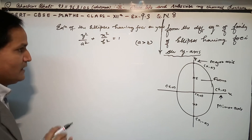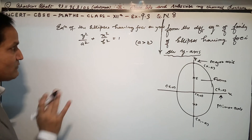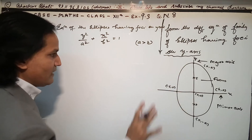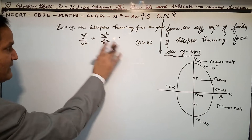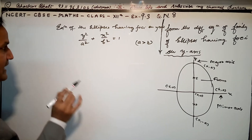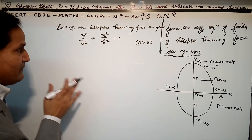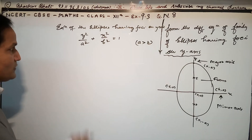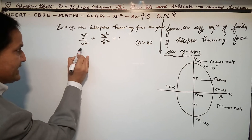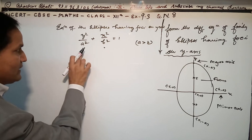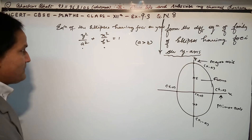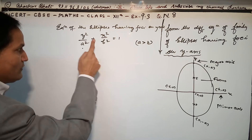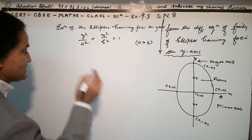Ellipse and hyperbola equations were covered earlier; the major axis is the larger one. Now, since this equation contains two arbitrary constants, to find the differential equation we will differentiate twice with respect to x.